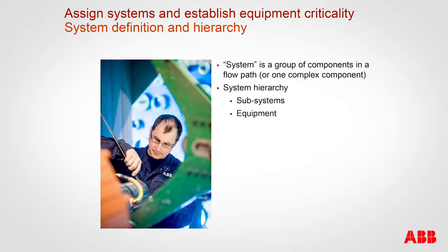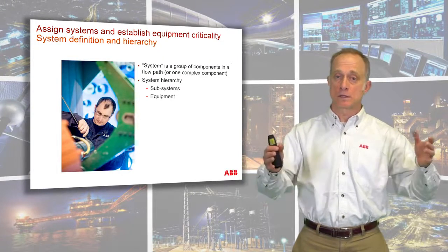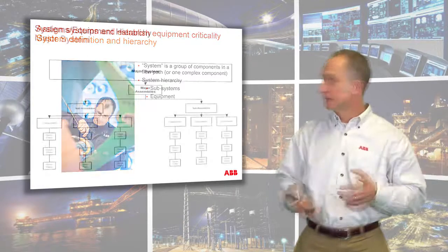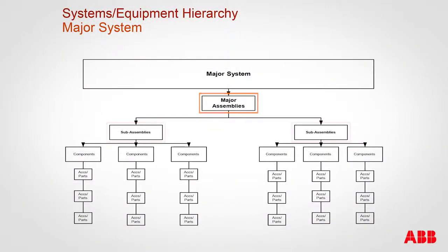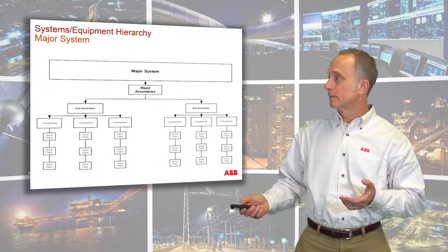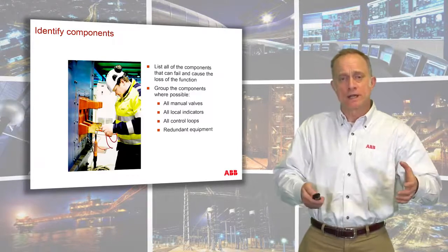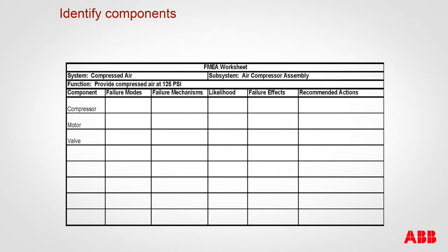Before we can assign criticality, we need to establish systems. A system is a group of components in an equipment category — a piece of equipment with all its subcomponents, or one singular complex piece of equipment. For example, a compressed air system would have compressor assemblies at the top level, then compressor units, each with a motor, compressor, and controls, down to a parts level. In our failure modes and effects analysis worksheet, we'd list the compressed air system, the subsystem of air compressor assembly, and components like compressor, motor, and valve. Then we identify the failure modes — what could go wrong with each component. For a compressor, it might seize; for a motor, it might fail to start; for a valve, it might fail to close.